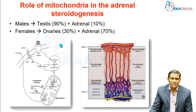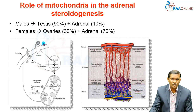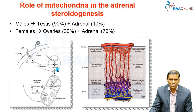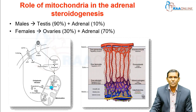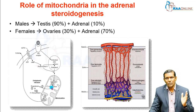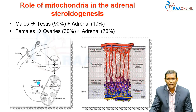Testosterone synthesis starts from cholesterol. Cholesterol enters the cytoplasm of the cell through its LDL receptor, then inside the cell it gets esterified. The esterified form of cholesterol is converted back to free cholesterol in the presence of lipase enzyme. This cholesterol then enters the mitochondria, where it undergoes mitochondrial oxidation in the presence of enzymes and gets converted to pregnenolone.